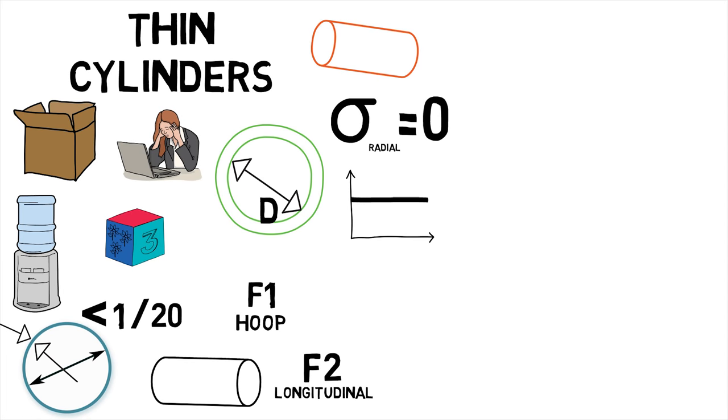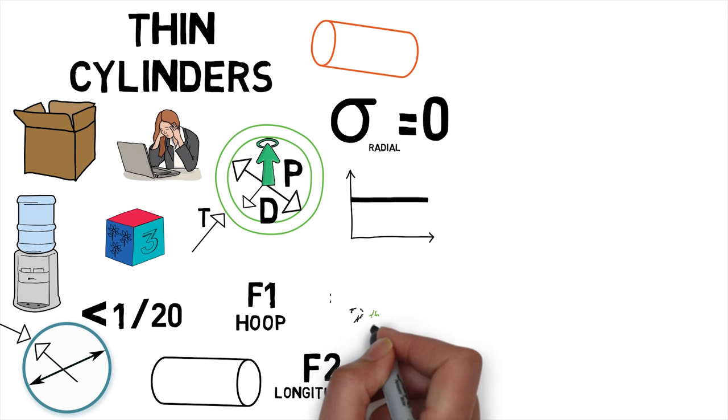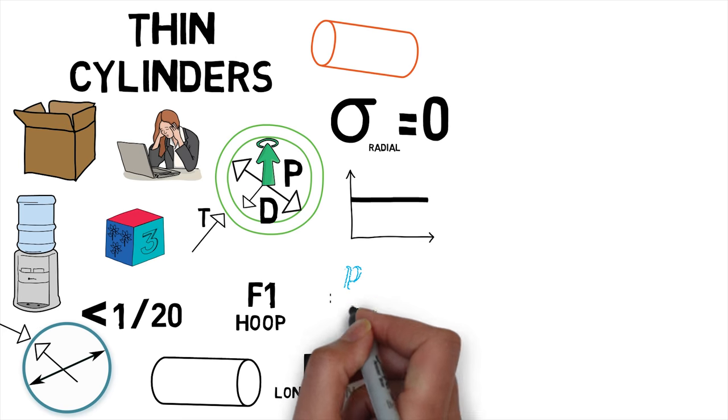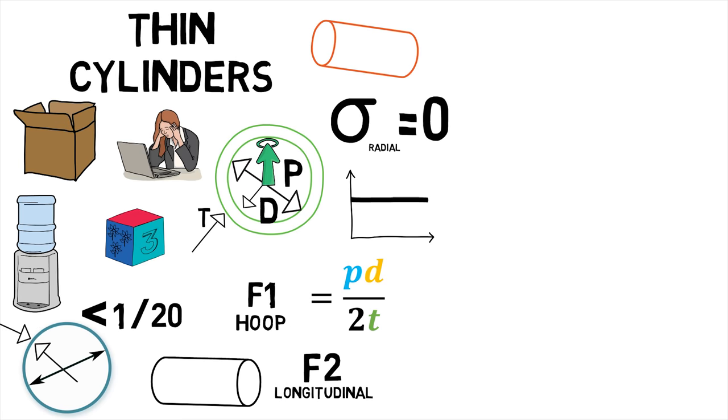For a cylinder with internal diameter D and a wall of thickness T, if the applied pressure is P, then the hoop stress is given by F1 equals P times D upon 2T and the longitudinal stress F2 is given by P times D upon 4T.